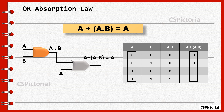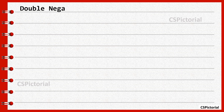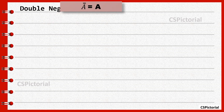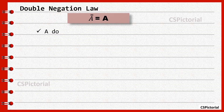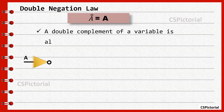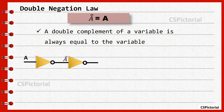The proof of this law through algebraic simplification will be presented in our upcoming videos. Kindly subscribe to our channel. Double negation law: A double bar equals A. A double complement of a variable is always equal to the variable itself.